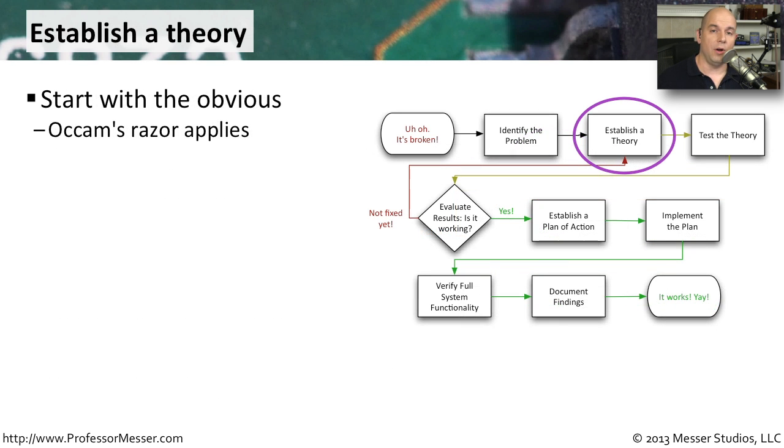Now that we have all of these details about where the problem might be, it's time to start piecing together some ideas of what's causing the problem. We need to come up with a few competing theories and determine which one of these we would like to choose. Generally, we start with the easiest ones first. Occam's Razor says that we can find the simplest set of hypotheses and follow the simplest ones from the very beginning. That's why we ask questions like, is it powered on? That's a pretty simple problem, and it's one that you can check and hopefully resolve very quickly.